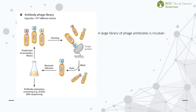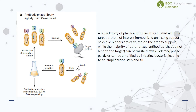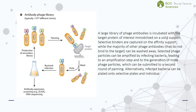A large library of phage antibodies is incubated with the target protein of interest immobilized on a solid support. Selective binders are captured on the affinity support, while the majority of other phage antibodies can be washed away. Selected phage particles can be amplified by infecting bacteria, leading to an amplification step and to the generation of more phage particles, which can be submitted to a second round of panning. Alternatively, infected bacteria can be plated onto selective plates and individual colonies correspond to distinct monoclonal antibody clones.